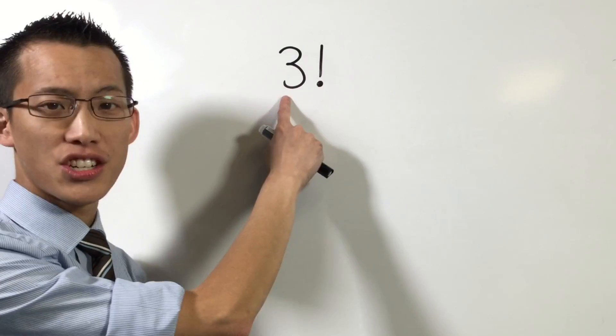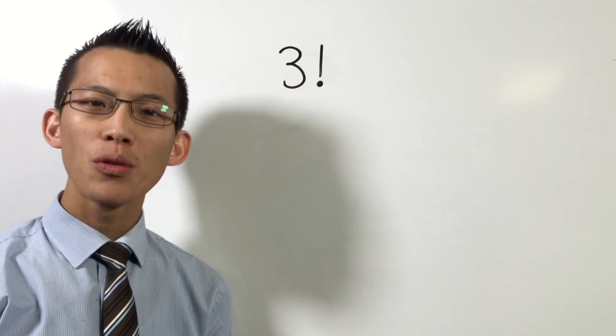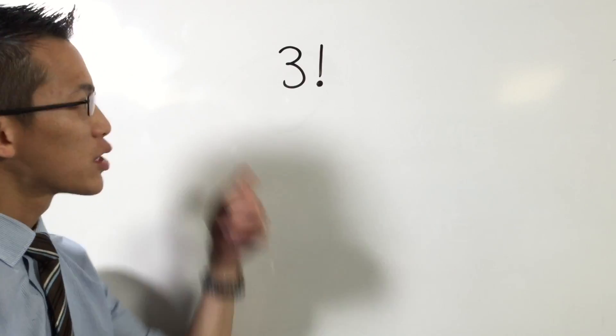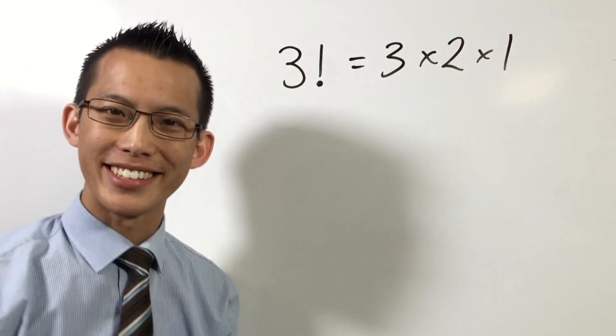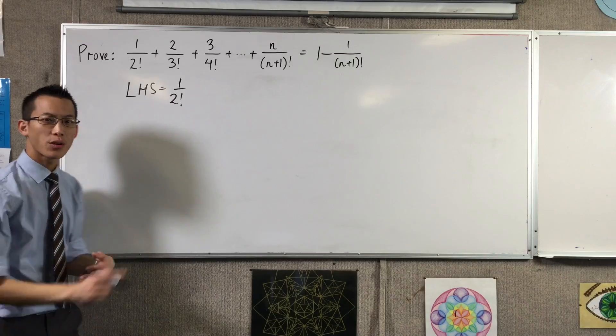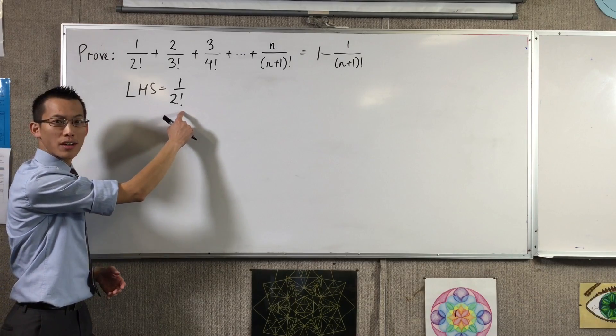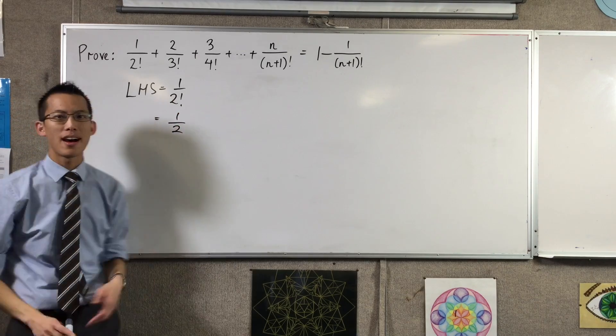It means taking a positive integer and multiplying by all the positive integers less than that. So 3 factorial is 3 times 2 times 1. In our case, 2 factorial is just 2 times 1. So the left-hand side is simply equal to a half.